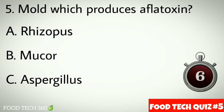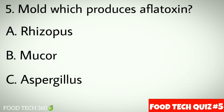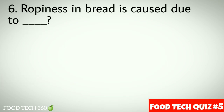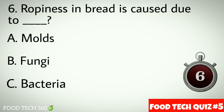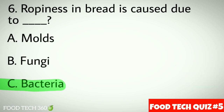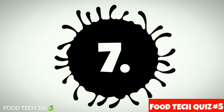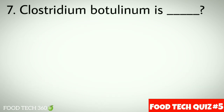Question number five: mold which produces flat sour. Options: a) Rhizopus, b) Mucor, c) Aspergillus. Correct answer: c) Aspergillus. Question number six: ropiness in bread is caused due to dash. Options: a) molds, b) fungi, c) bacteria. Correct answer: c) bacteria.